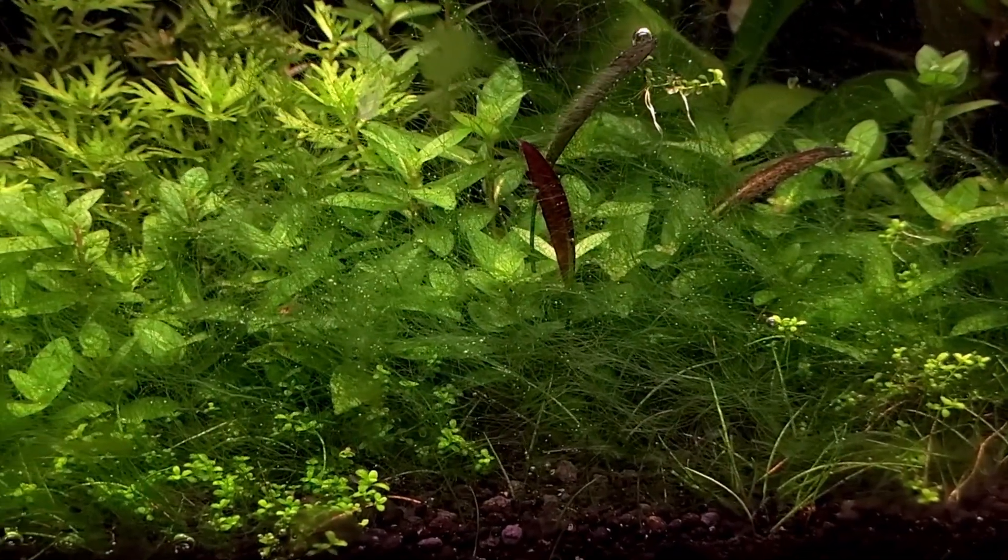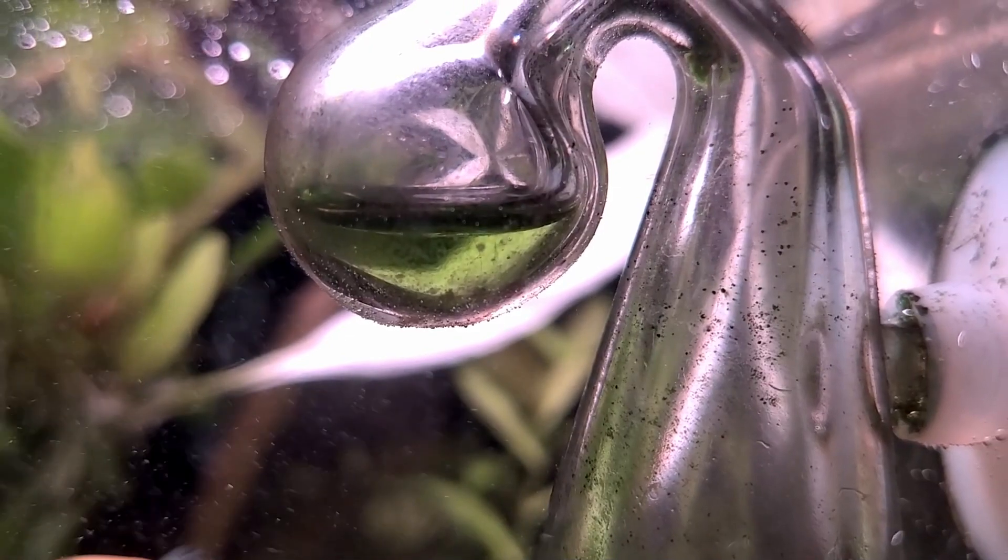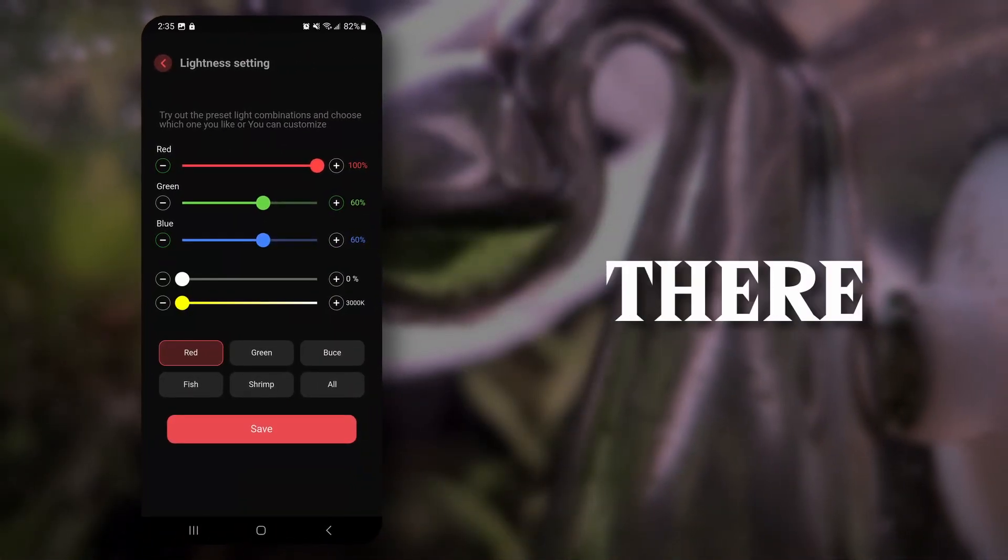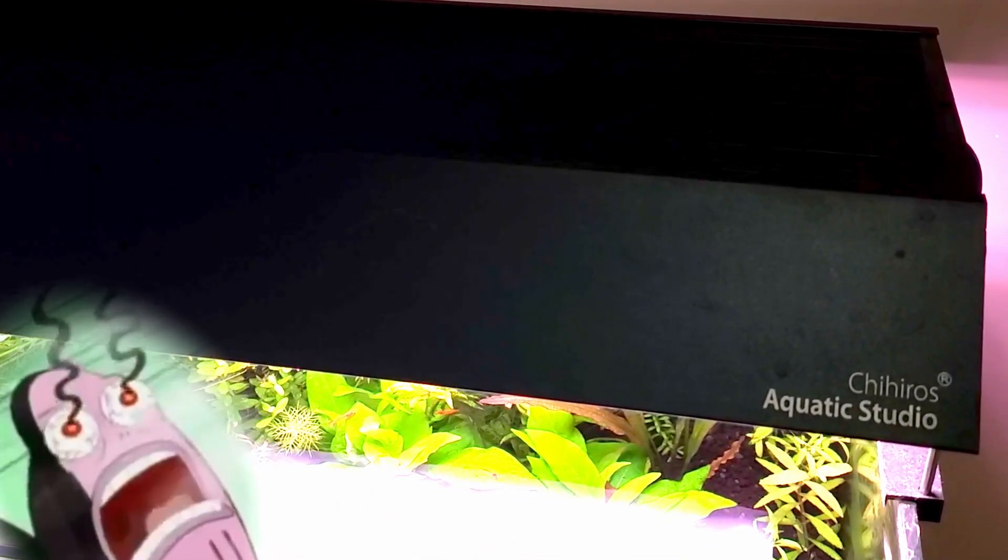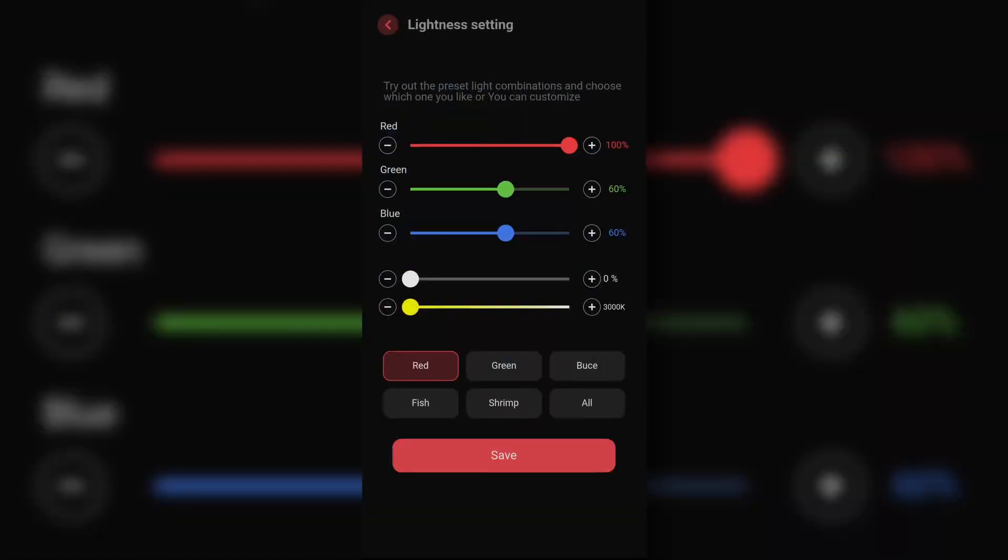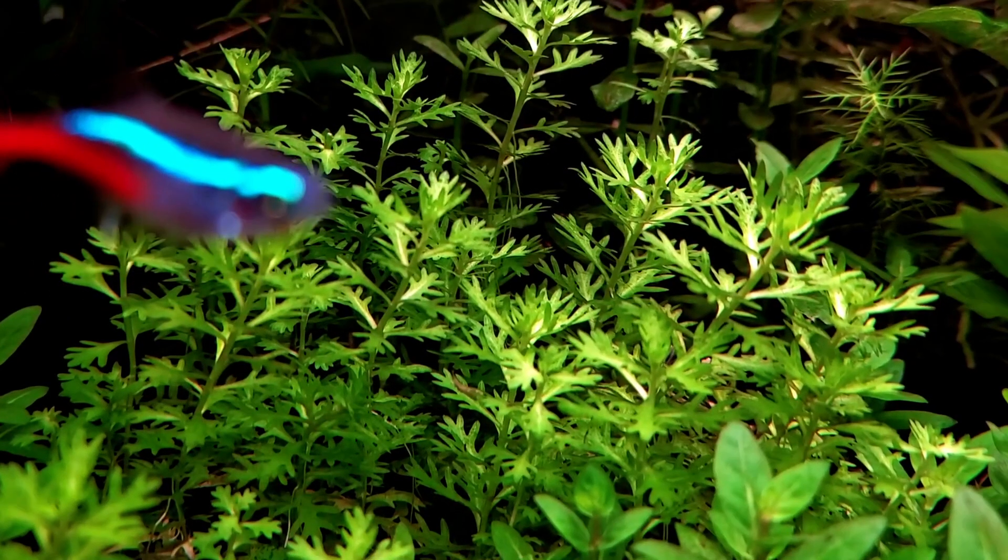Diatom algae started to flourish. I didn't change any other aspect other than the light intensity. Right then and there, I knew that the light intensity was too strong. After removing the algae and lowering the intensity, things started to get better.